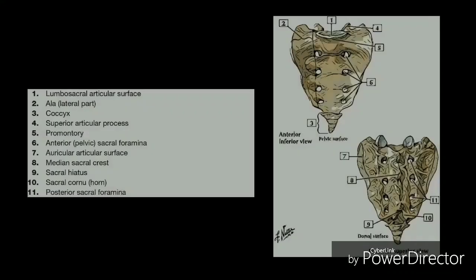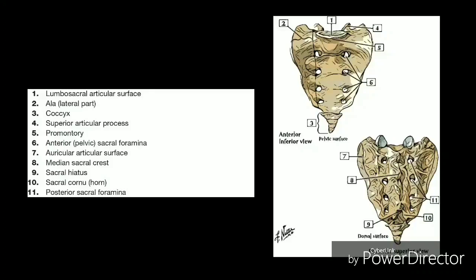The sacrum's main function is to connect the spine to the hip bones. There are five sacral vertebrae which are fused together. Together with the iliac bones, they form a ring called the pelvic girdle.